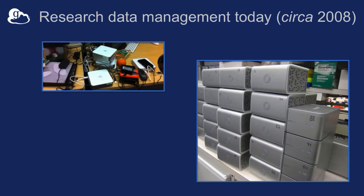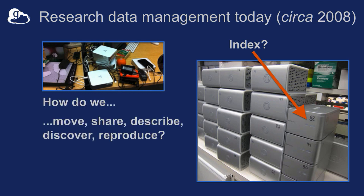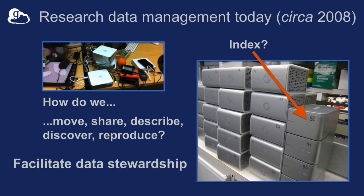Day one was about 10 years ago, and this was the picture on campus of what people's data looks like in their labs — one of these was actually on our campus. I show this slide because I'm intrigued by the numbering scheme: each of these drives is numbered, so there's obviously an index somewhere tracking that data, and one wonders what happens when the grad student who has that index Excel file leaves the institution. The question is: how do we move, share, describe, and make data reproducible and discoverable? How do we facilitate data stewardship throughout the research lifecycle?